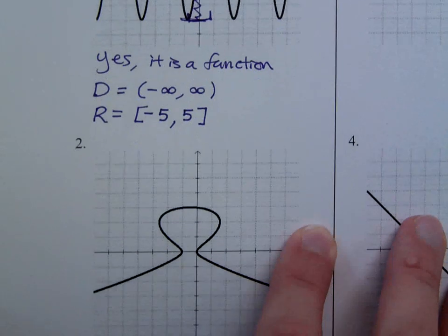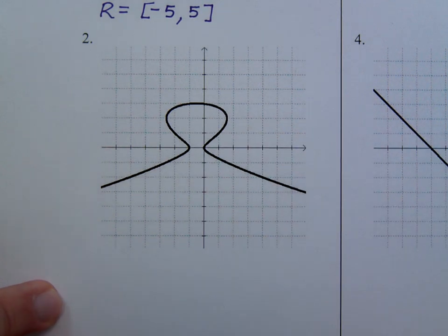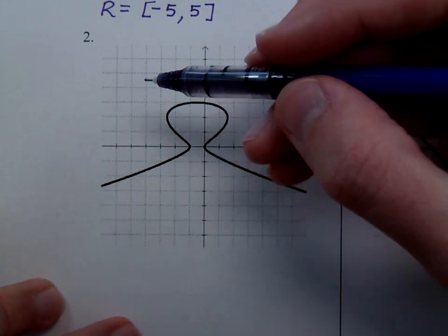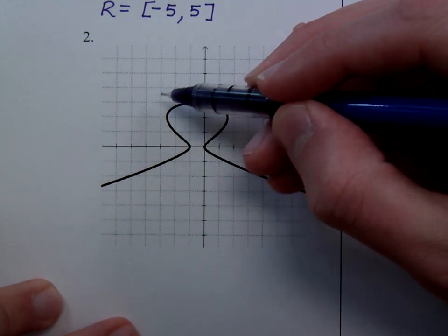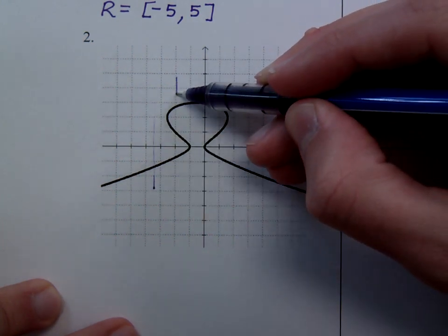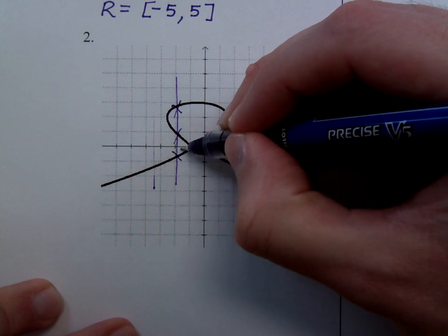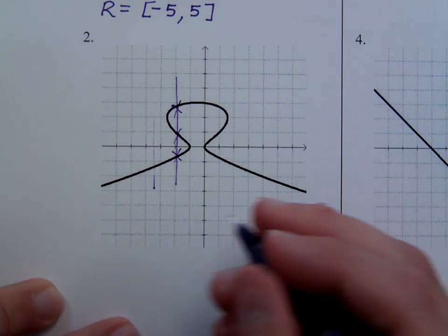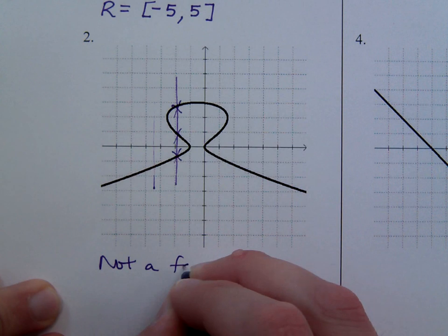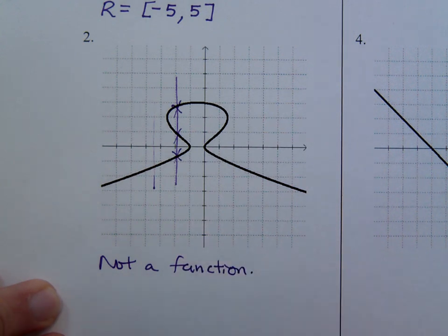What about number two? Is this a function? Well, if I were to draw a vertical line here, that's okay. But if I draw a vertical line right here, this is not a function because it goes through more than one point. So this is not a function.